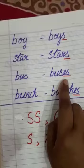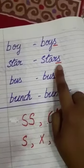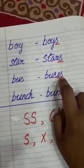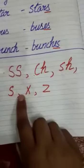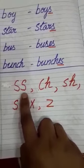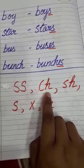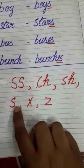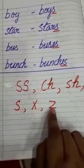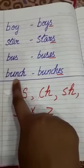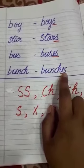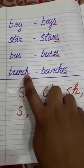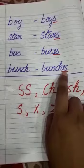Here bus becomes buses, bunch becomes bunches. Look at the difference — here S and here ES. Why is it so? This is the rule: words ending with double S, CH, SH, S, X, and Z — the plural will be ES. For example, bunch ends with CH, so the plural is ES.